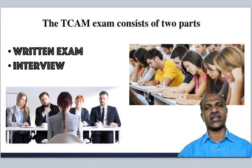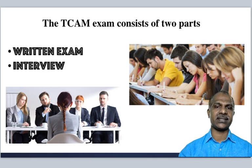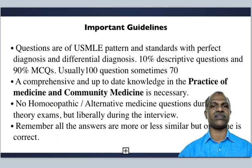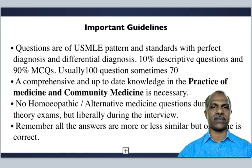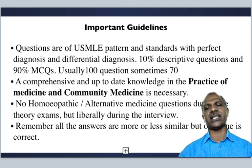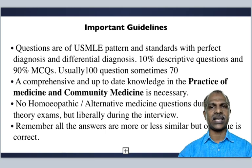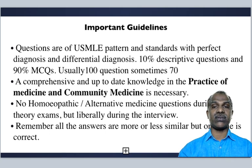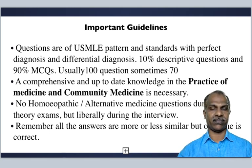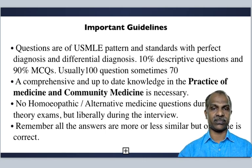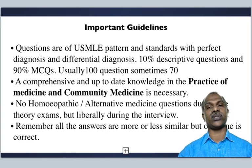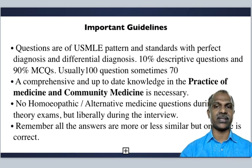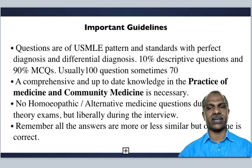The TCAM examination consists of two parts: written examination and interview. Questions are of USMLE pattern and PG standard, with perfect diagnosis and differential diagnosis. 10% descriptive questions and 90% MCQ — usually 100 questions but sometimes 70. You need comprehensive, up-to-date knowledge in practice of medicine and community medicine. Remember: no homeopathy or alternative medicine questions during the theory exam, as this exam is common to all branches including Ayurveda, Siddha, and Yunani. Questions come mainly from practice of medicine and community medicine.